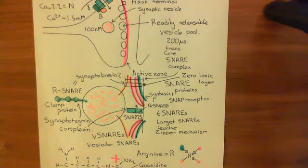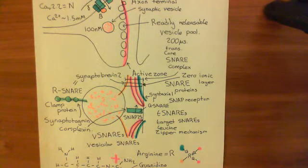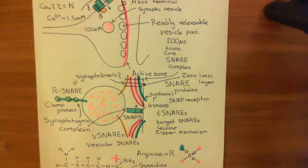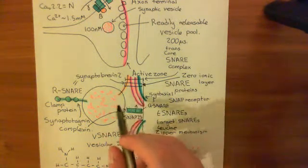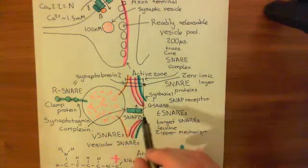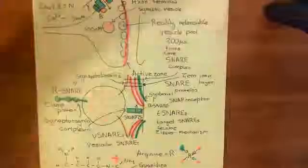In the next video, we will discuss an assay that Rothman did to show that you need something along the lines of this to stop these SNARE complexes from just fusing the synaptic vesicle with the plasma membrane.